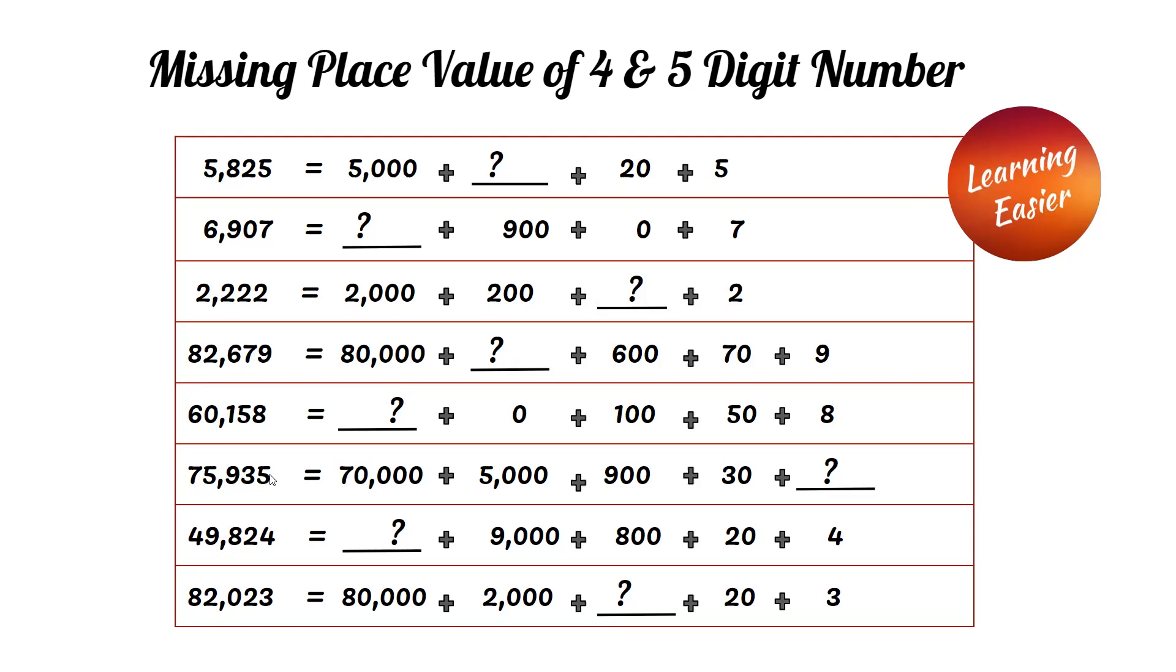75,935. Since the five in the ones place has a value of 5, five is the correct answer.